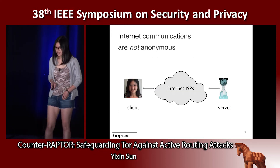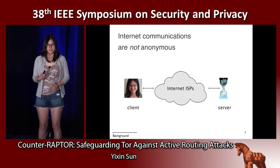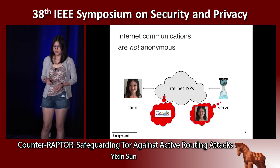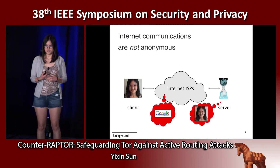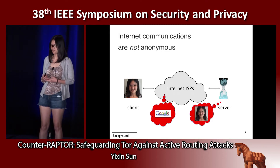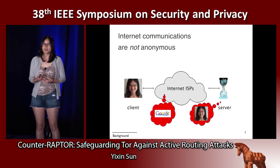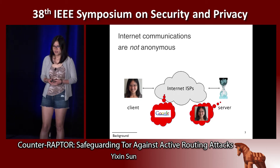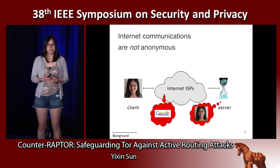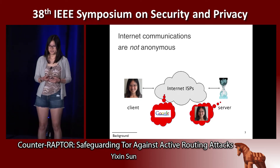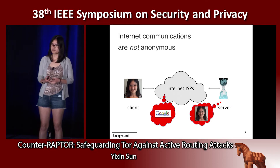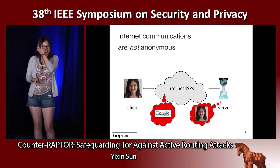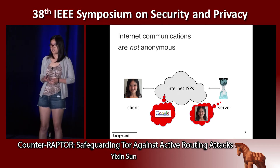Internet communications are not anonymous. Consider this simple case when a user visits a website: the ISPs learn the destination identity of the site the user is visiting, and the destination also learns the source identity, which is the user. Furthermore, anyone able to eavesdrop on this internet communication can learn the same information by simply looking at the IP headers. And this problem remains even if the communication is encrypted.